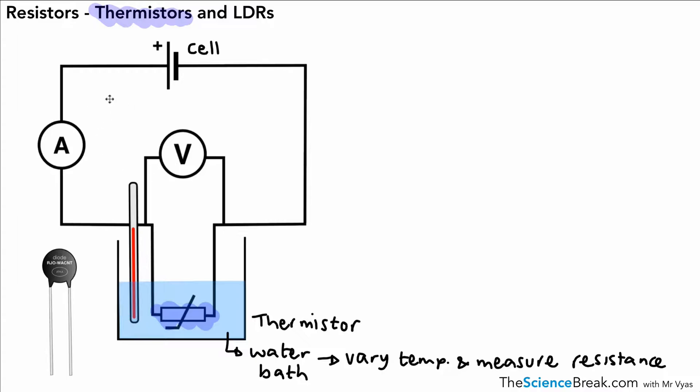That equation is R equals V over I. That is, resistance is potential difference divided by current. We're measuring the potential difference in the voltmeter and we're measuring the current.